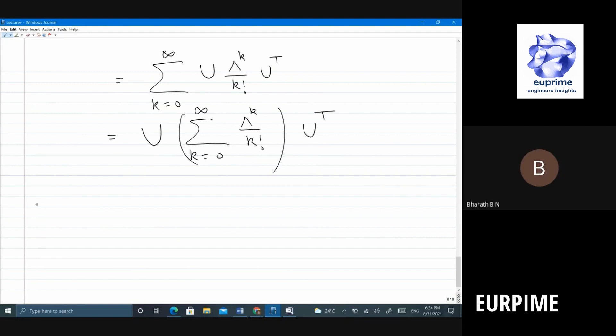So what is this? This is U, summation k equal to 0 to infinity, what is lambda per k? Lambda 2 power k, lambda n power k, 0, 0, whole divided by k factorial U transpose. Right? This is how it looks like.